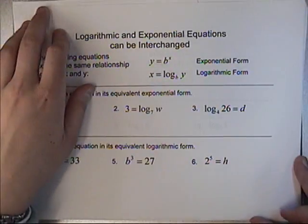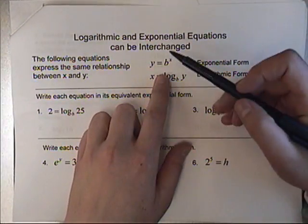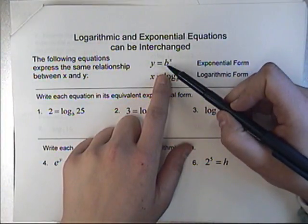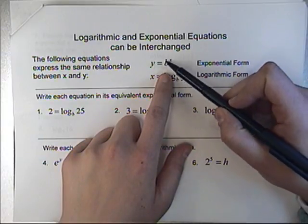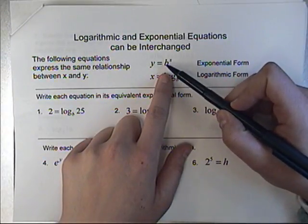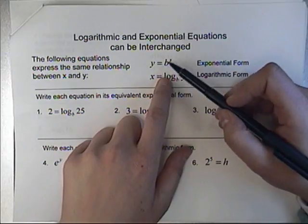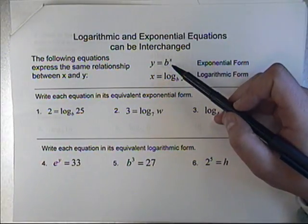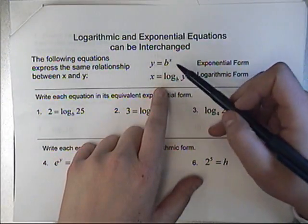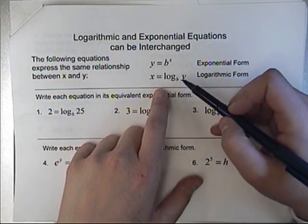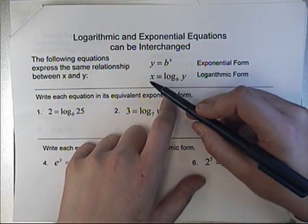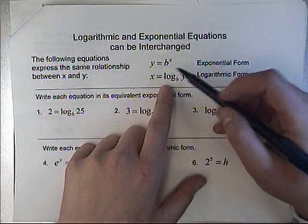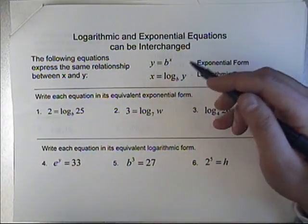Basically what we have is we've been studying exponential functions, which take this form: y equals base b to the x. Now again, b is your number. Now, sometimes we want to solve for the x. We want to solve for the exponent. And when we need to do that, we need to use a different notation.